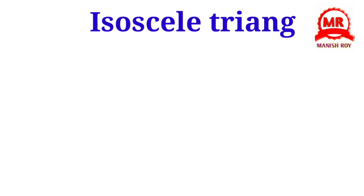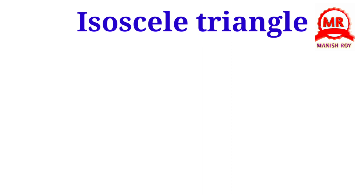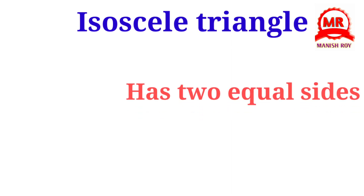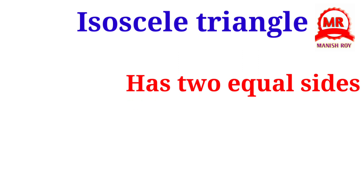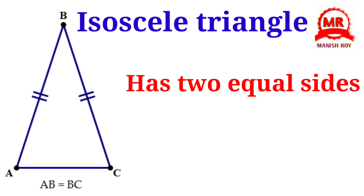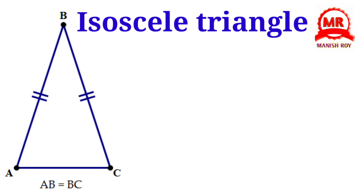Isosceles triangle. An isosceles triangle has two equal sides. You can see in this figure that in triangle ABC, two sides AB and BC are of equal length, so it is an isosceles triangle.